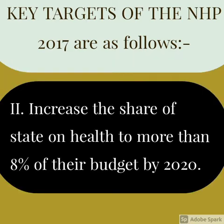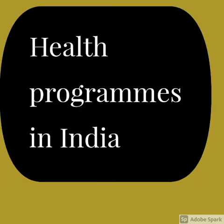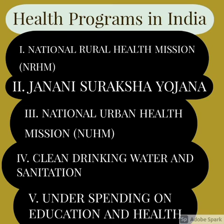Eighth, ensure skilled attendance at all births above 90% by 2025. Ninth, relative reduction in prevalence of current tobacco use by 15% by 2020 and 30% by 2025. Tenth, access to safe water and sanitation to all by 2020, i.e., through the Swachh Bharat Mission. Eleventh, increase the share of state spending on health to more than 8% of their budget by 2020. Health programs in India include: National Rural Health Mission (NRHM), Janani Suraksha Yojana (JSY), and National Urban Health Mission (NUHM).